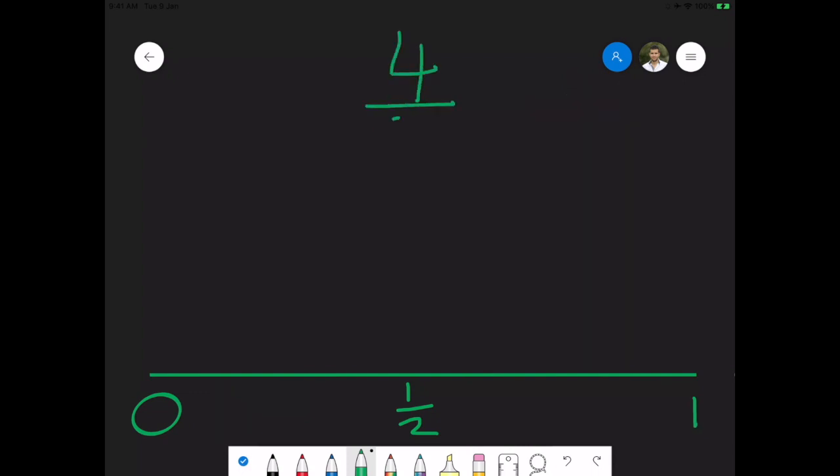Alright, now let's try 4 out of 7. How would I go about this? Let's think of our benchmark numbers. I have 0, a half, and 1. It cannot be close to 0 because I'm already having 4 pieces out of 7. So let's see how it compares to the half and the whole.